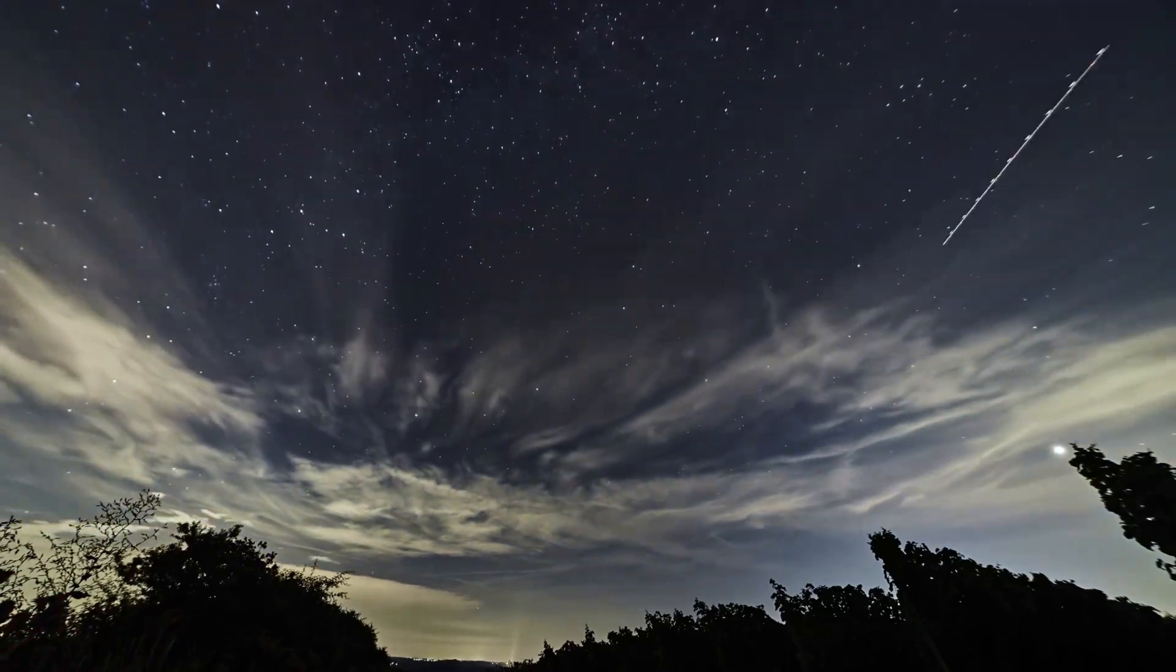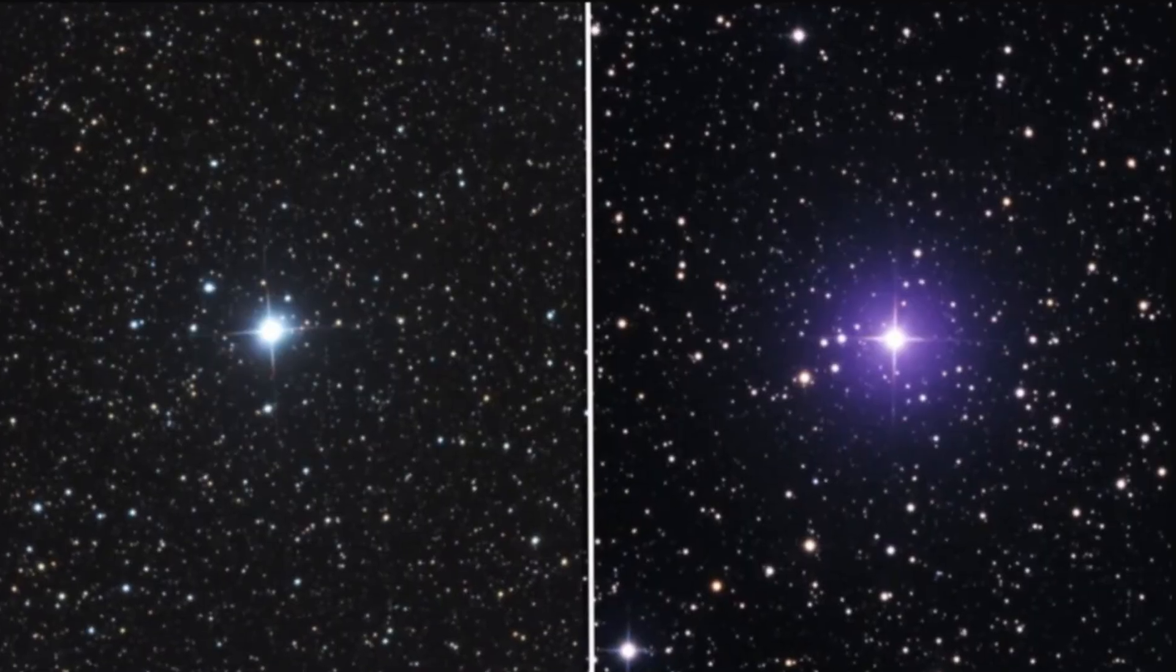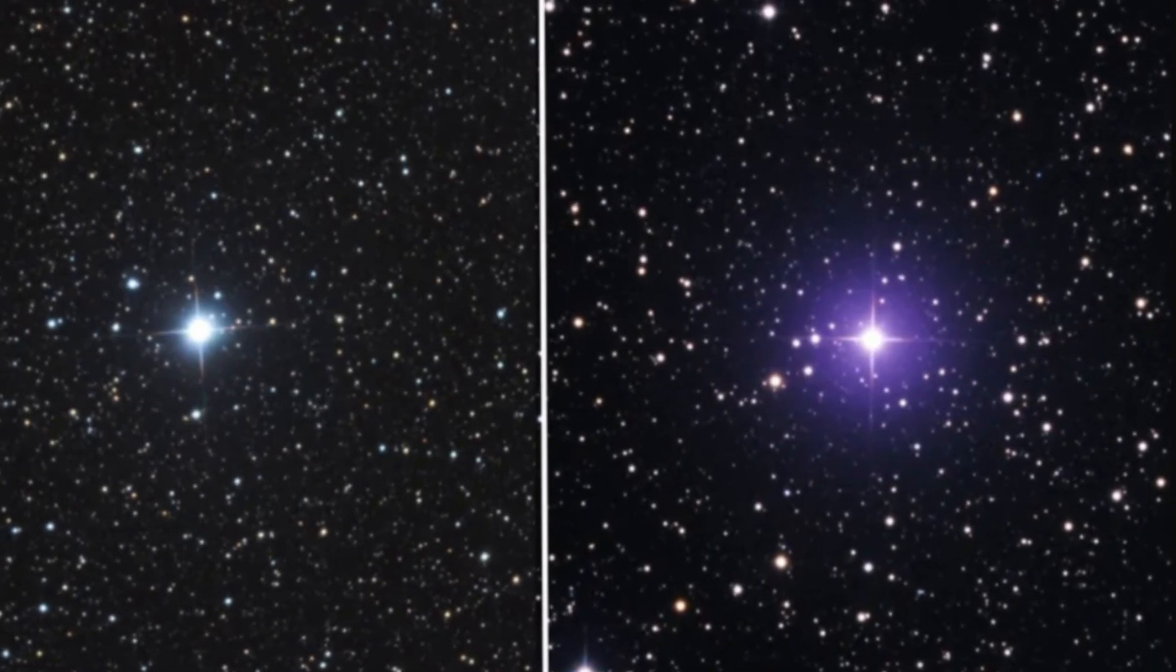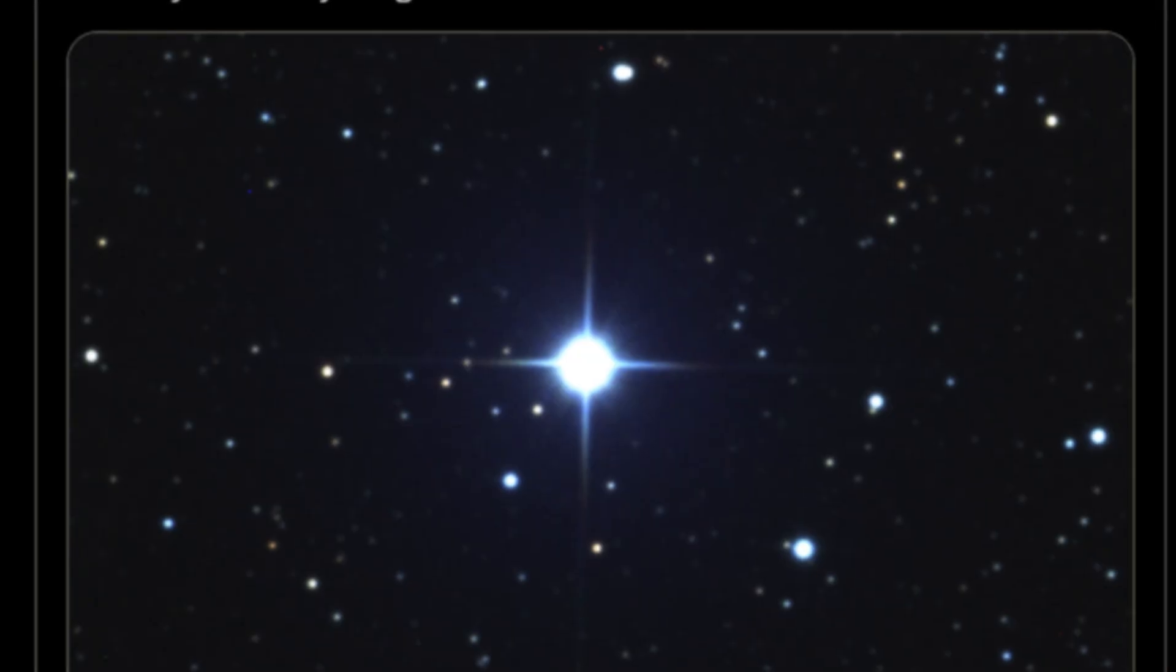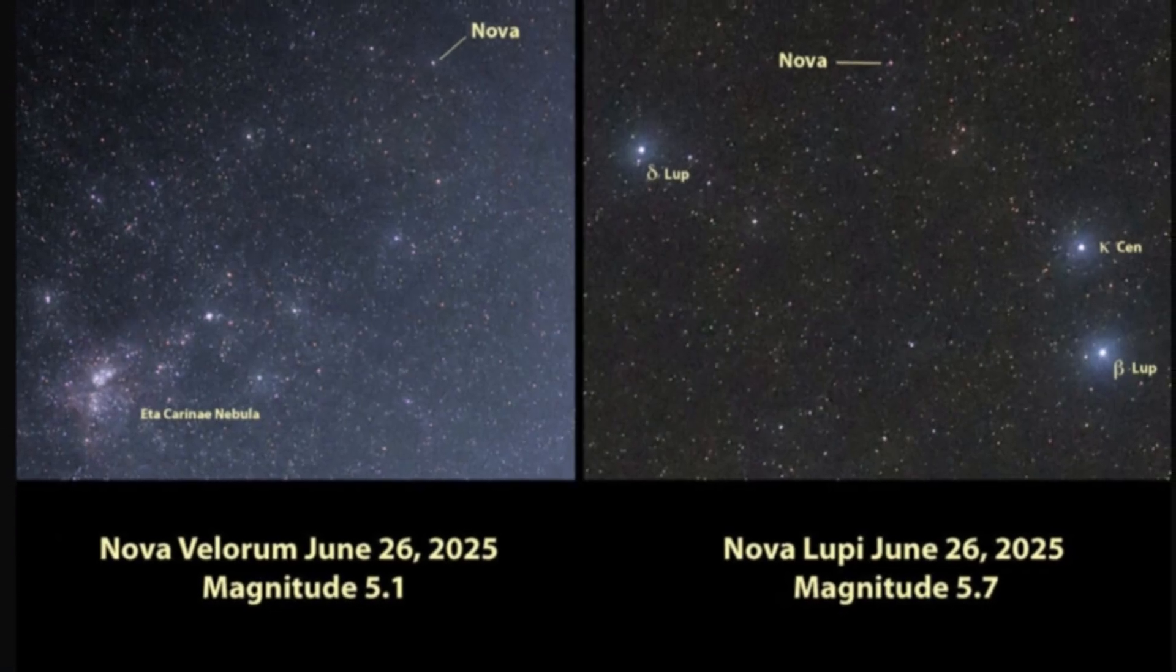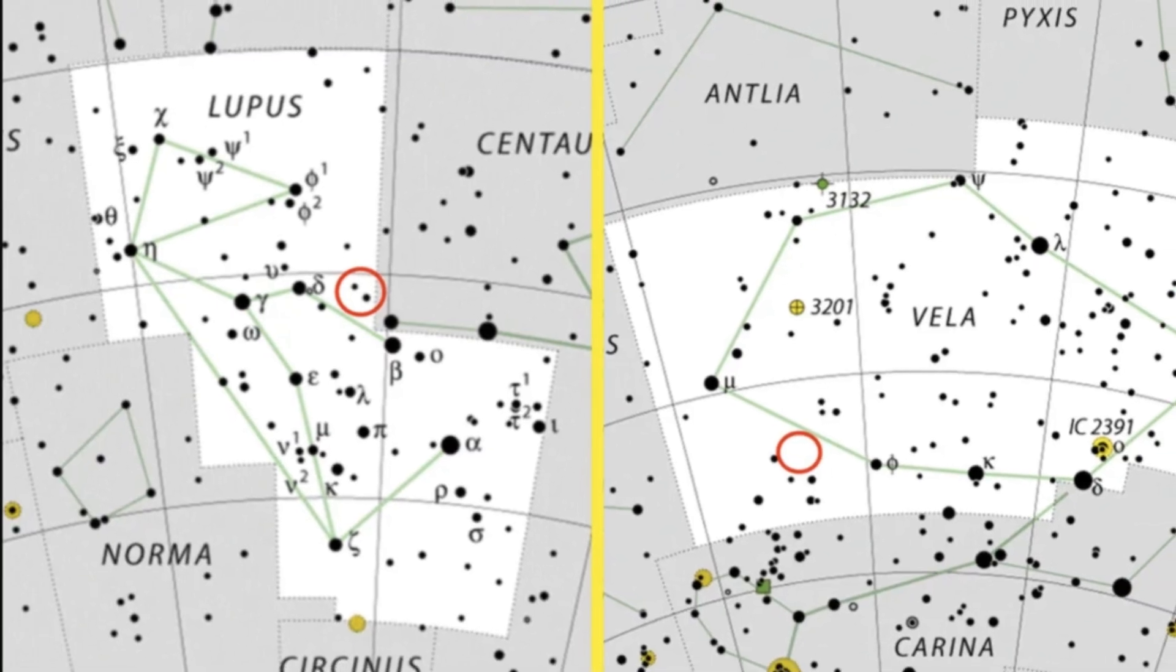Look up at the night sky tonight. Something extraordinary is happening. Two distant stars, V572 Valorum and V462 Lupi, have erupted in brilliant explosions, both visible to the naked eye. This is the story of the dual novi of July 2025, the celestial spectacle for the history books.